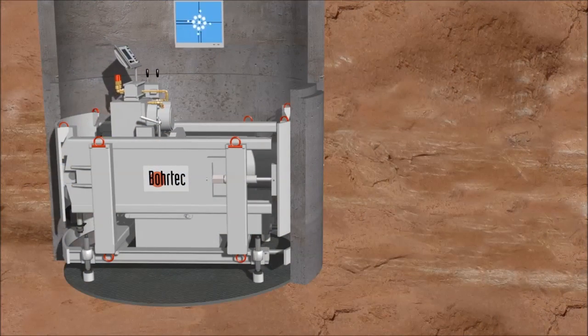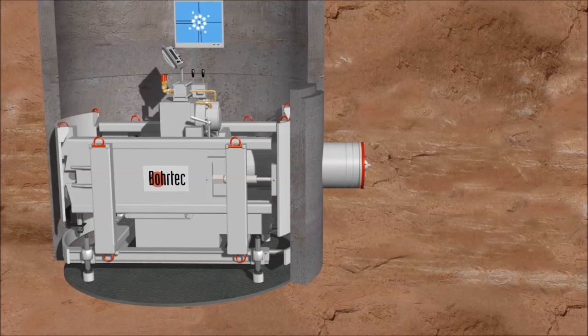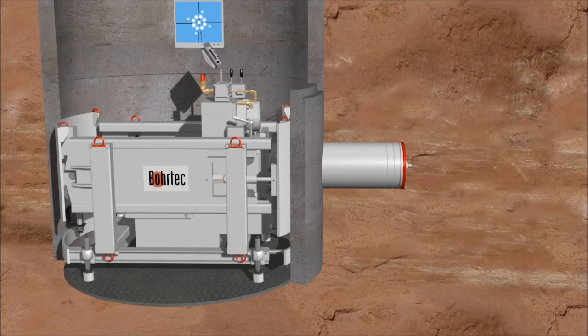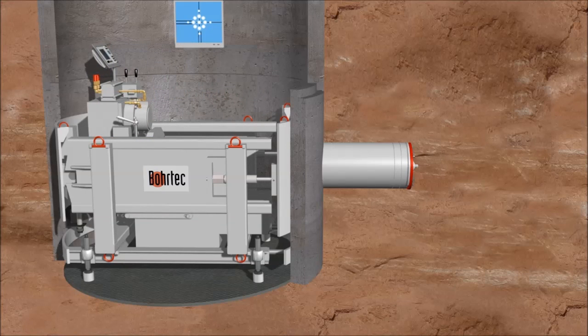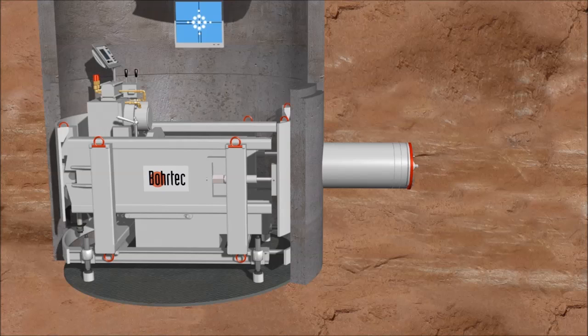The front steer is pushed out of the launch shaft through a flexible seal and into the soil. Steel casings are added and jacked into the ground.